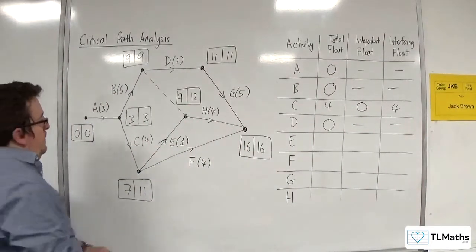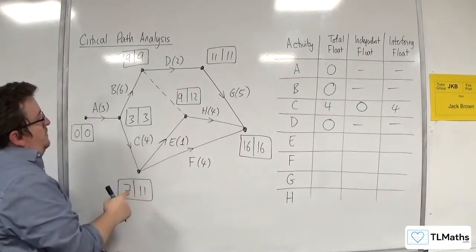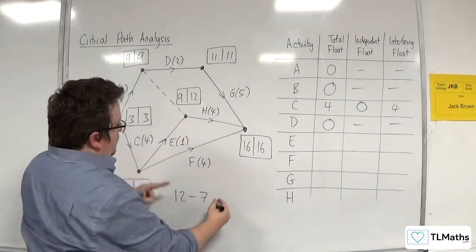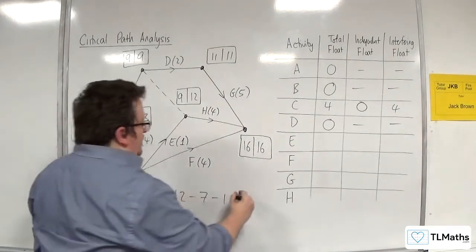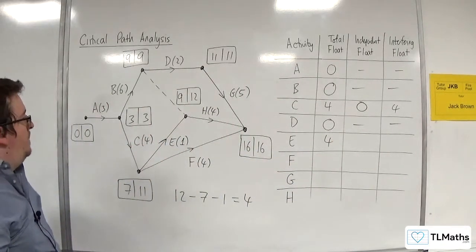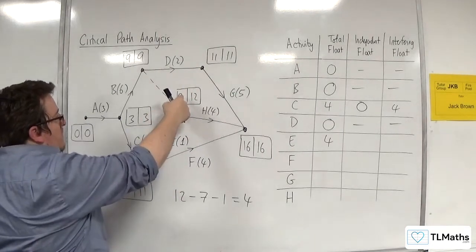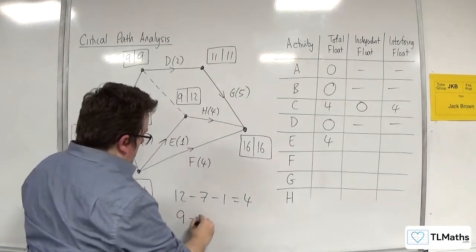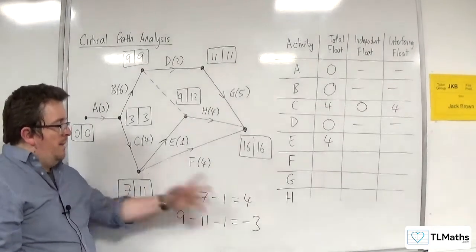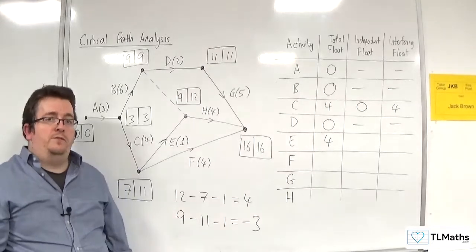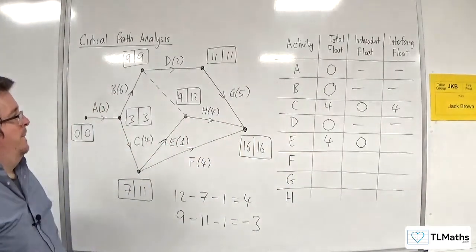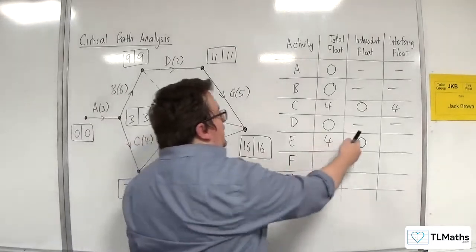How about E? For E, it's not critical. For the total float, we've got 12 — the outer — take away 7, take away 1. So 12 take away 7, take away 1 would be 4. That's the total float for E. For the independent float, that would be 9 take away 11, take away 1, which gives us minus 3. But remember, we can't have a negative value for the independent float, so we just put 0. And then the interfering float is 4 take away 0, which is 4.